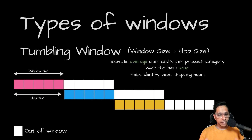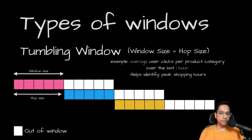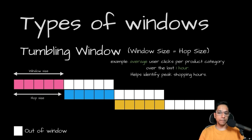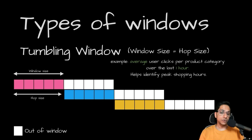Now let's understand what a tumbling window is. Tumbling windows are a special case of hopping windows where both the window size and the hop size are equal. The window moves or tumbles in increments equal to the window size. They are based on time intervals, fixed size, and more importantly, they are non-overlapping and gapless. As there is no overlap, an event will only be part of exactly one window. For example, suppose we want to analyze user clicks on a product category received every hour — this helps identify peak shopping hours and how user interest varies throughout the day.